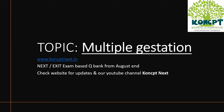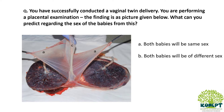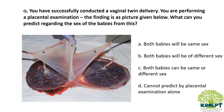This is a discussion on an MCQ from the topic of multiple gestation. You have successfully finished conducting a vaginal twin delivery and are asked to examine the placenta, a picture of which is given. From this picture, can you predict the sex of the babies? The options are: both babies will be of the same sex, both babies will be of different sex, both babies can be of same or different sex, or cannot predict by placental examination alone.